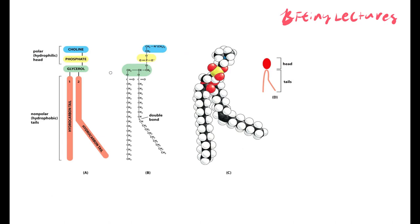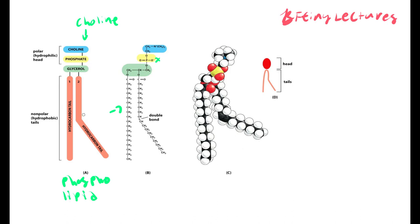Here we have three different pictures of the same phospholipid. In position X, we have choline, which is a small polar molecule that attaches to one of the oxygens in the phosphate head. Notice that we can have two configurations: a straight configuration and a crooked configuration. The straight conformation is called cis, and the crooked one is called trans.